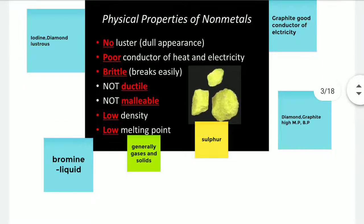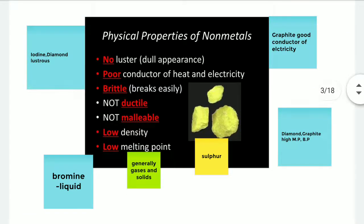Now when we look at the physical properties of non-metals, they are just the opposite of the properties of metals. Non-metals have no luster. Non-metals are poor conductors of heat and electricity. Non-metals are brittle — they are not ductile and not malleable. They have low density and low melting point. But again, let us look at the exceptional cases. Graphite is a good conductor of electricity, and diamond and graphite have high melting and boiling point.